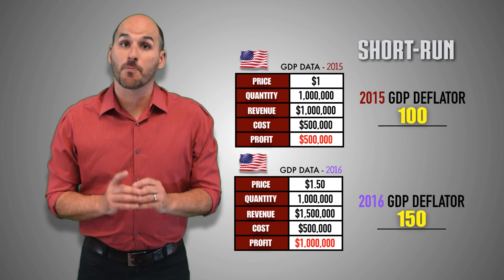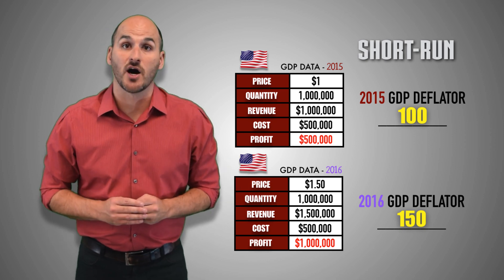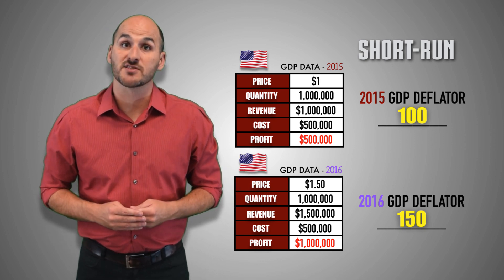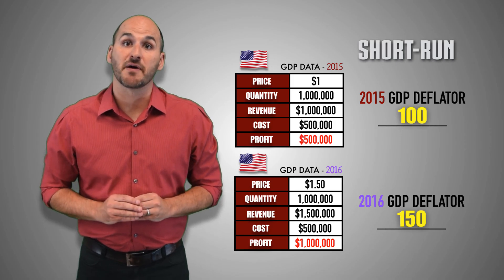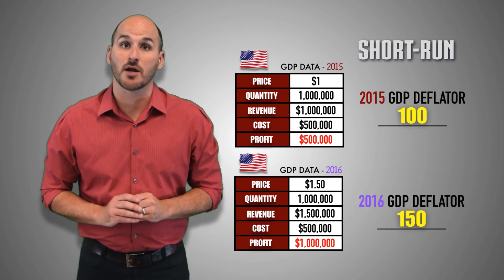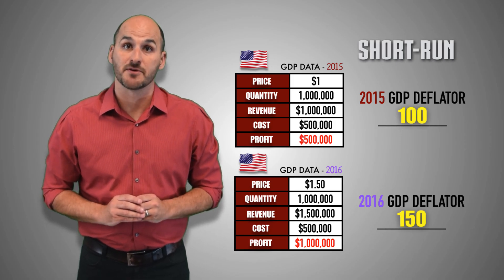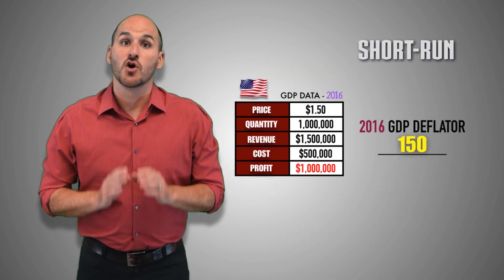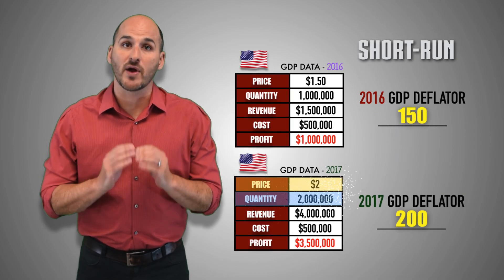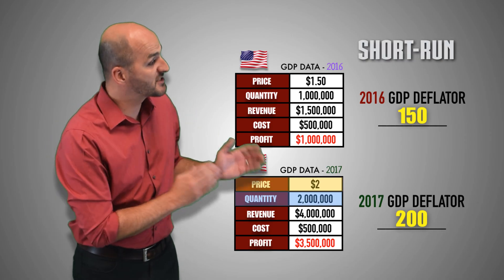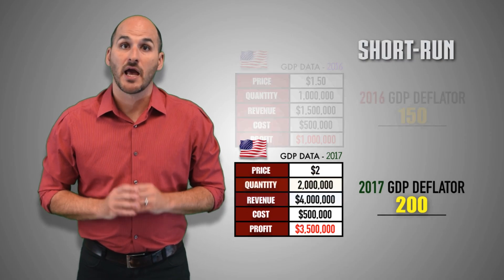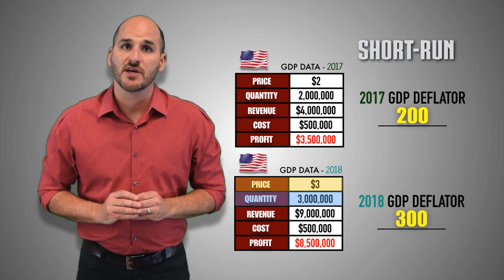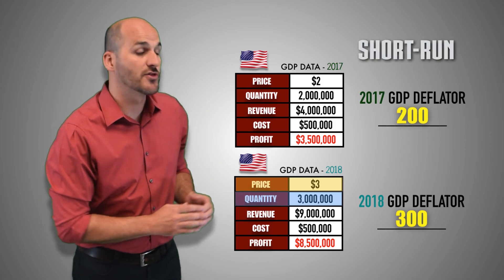For instance, in our previous example using the United States economy, we concluded that as wages remain fixed in the short-run, profits increased by 50% for firms across the economy when inflation increased by 50%. As long as wages remain fixed, firms have an incentive to supply greater quantities of real GDP output as prices continue to increase, and profits will continue to increase as output supply increases in the short-run.